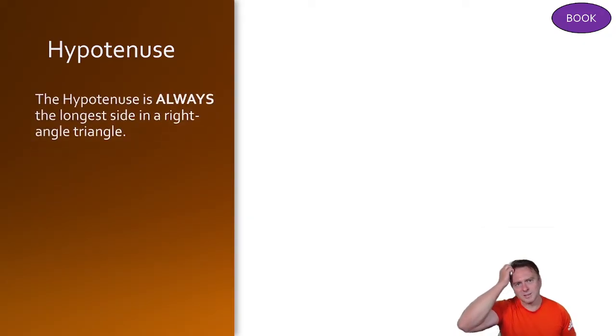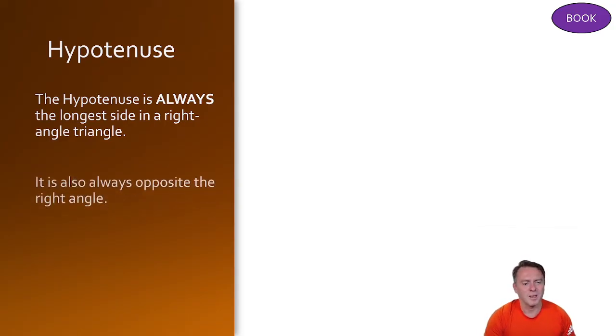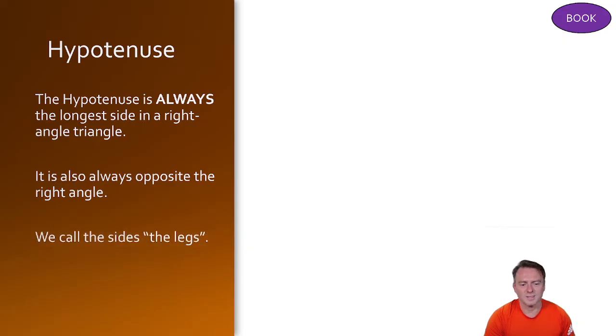So in your books you'll need to write this. So the hypotenuse is always the longest side in a right angle triangle. It's always opposite the right angle and we call the other sides the legs. So the smaller sides we call those the legs.